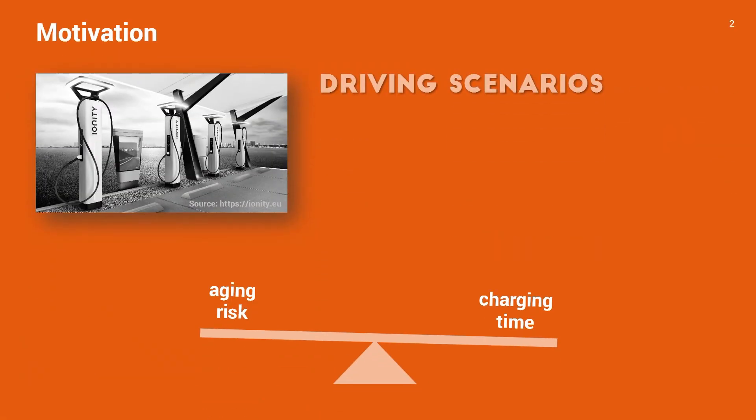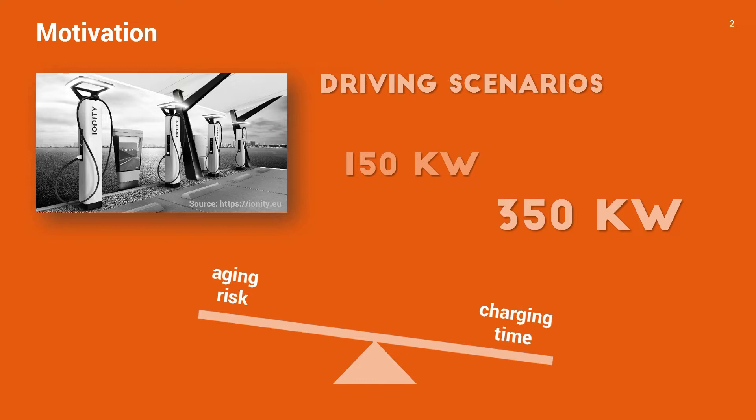Why is it so challenging to develop fast charging strategies? Well, before you fast charge a car, it sees different driving scenarios. And when you then fast charge, the faster you charge, the higher the aging risk becomes. This goes to an extreme if you go below 15 minutes.